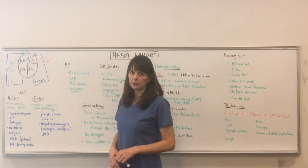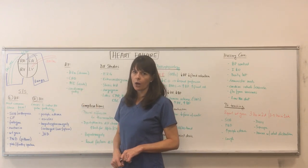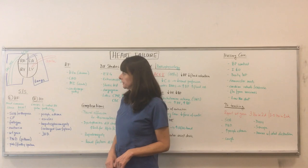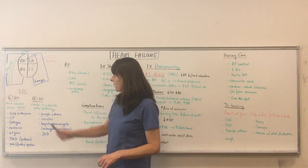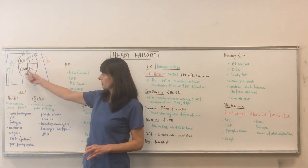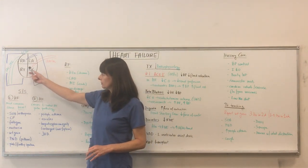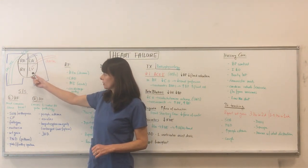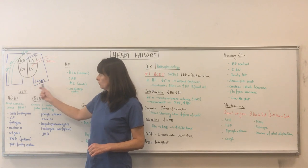I've drawn out a little diagram of the heart and lungs here. We have the right atrium, right ventricle, left atrium, left ventricle, and lungs in blue.